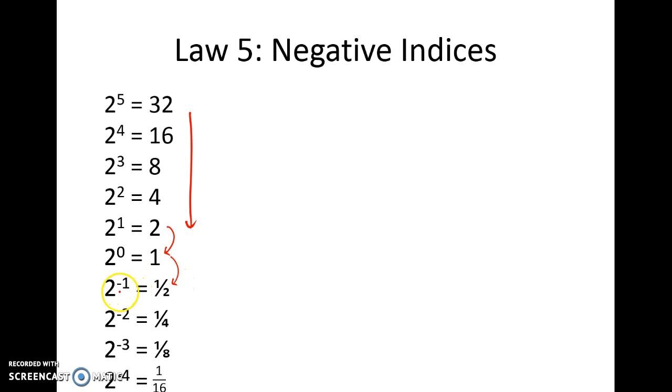So it is possible to see that as we go into the negative indices, for instance 2 to the negative 1 we get 1 on 2 to the power of 1. When we go down to 2 to the negative 2 we have 1 on 4 which could be written as 1 on 2 squared. 2 to the negative 3 is 1 on 8 or 1 on 2 cubed. And 2 to the negative 4 could be written as 1 on 2 to the power of 4.